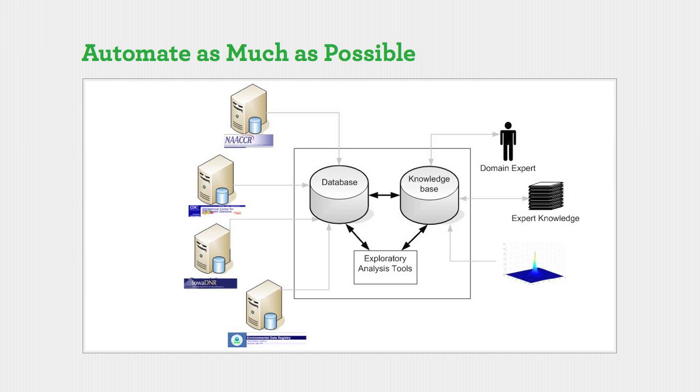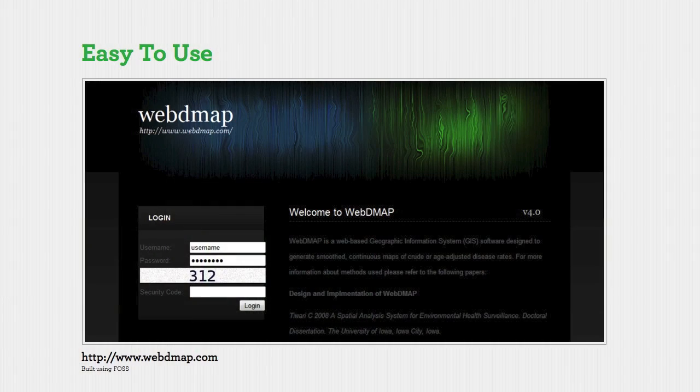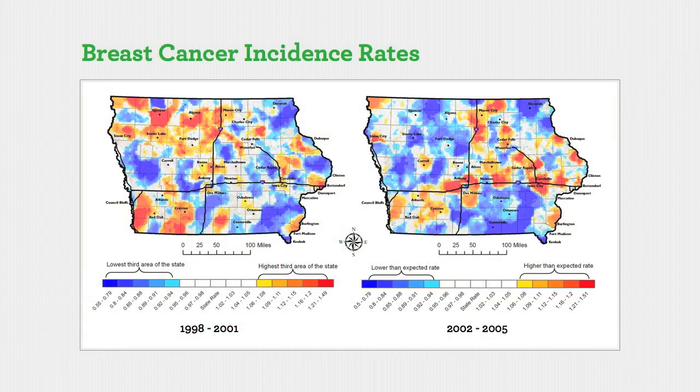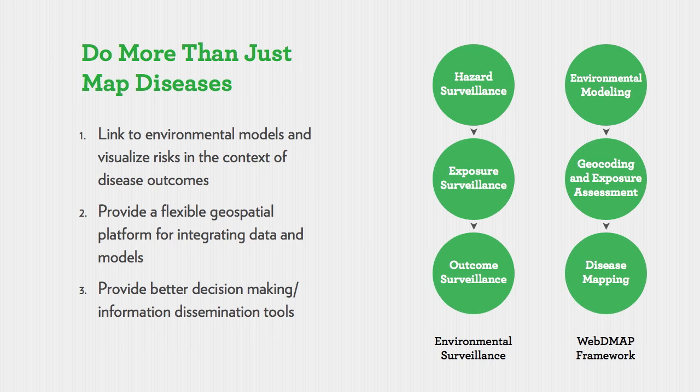We need to start automating this process as much as possible. We collect data all the time and are concerned about the privacy and confidentiality of health datasets, so the ability to automate disease mapping is important. I've been working on an open source framework called WebDMap, downloadable from the listed website, providing an easy-to-use interface for creating these maps. You can ask questions about how cancer burdens have changed over a five- or six-year period, and start linking disease outcomes to environmental risk factors — such as exposures to contaminants from confined animal feeding operations.